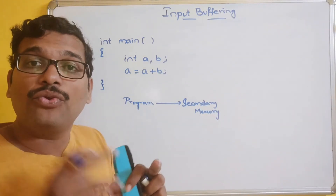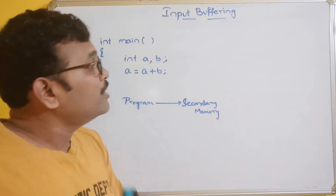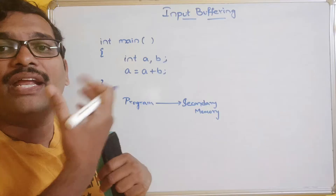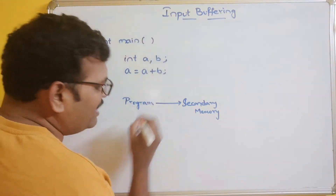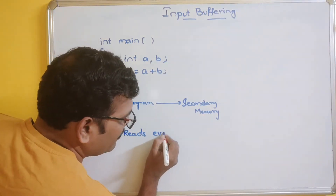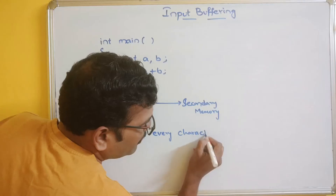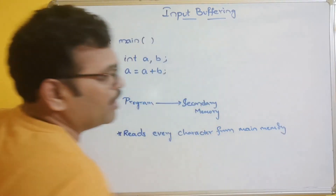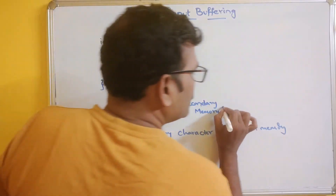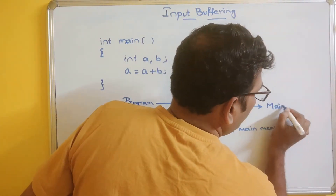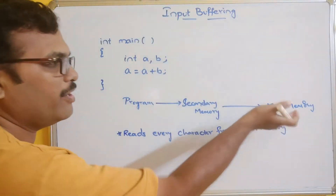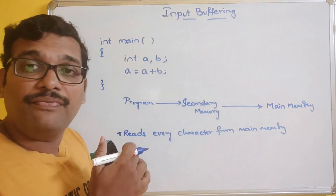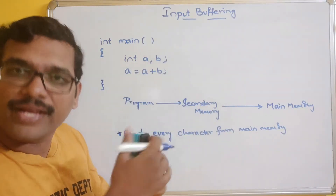Because the processor will execute only the information available in the main memory. In order to convert the program into tokens, it requires reading each and every character. First the program will be copied into the main memory, and then from the main memory each and every character will be retrieved and the controller will identify the tokens and the category of tokens.